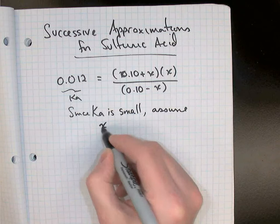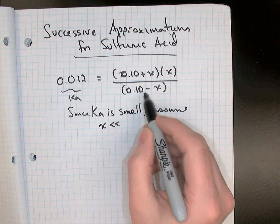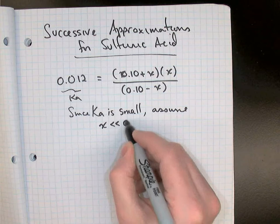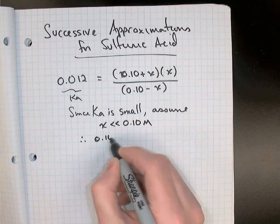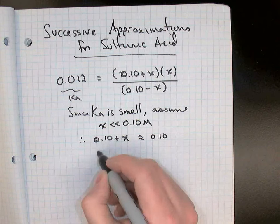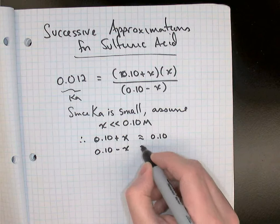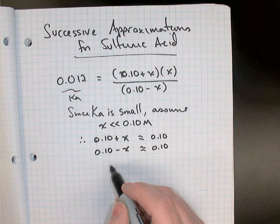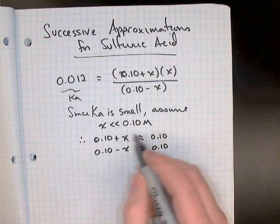Since it's being added and subtracted from 0.10, we'll assume that X is much less than 0.10 molarity. Therefore, 0.10 plus X, if you take 0.10 and you add something very very small to it, you'll get approximately 0.10, and 0.10 take away X, the thing that's on our denominator up here, will also equal 0.10. So if you take something very small from 0.1, your answer will be still pretty close to 0.1.